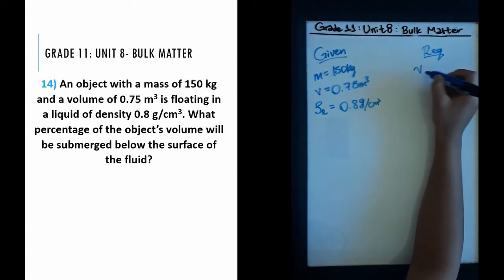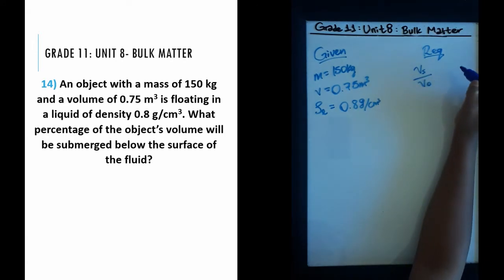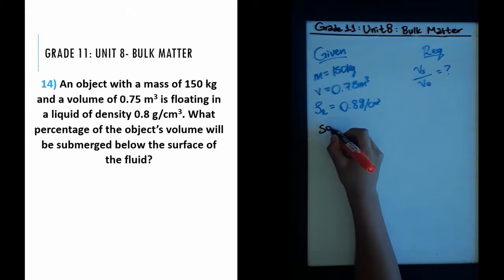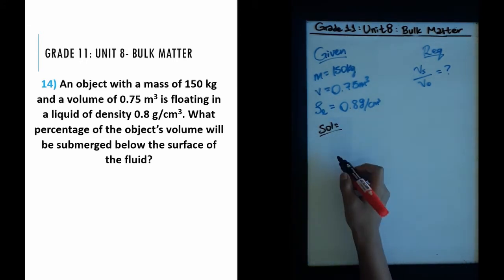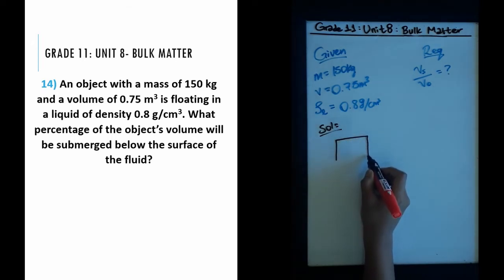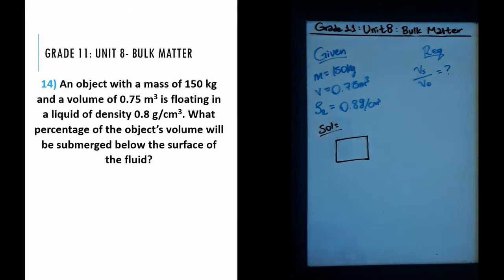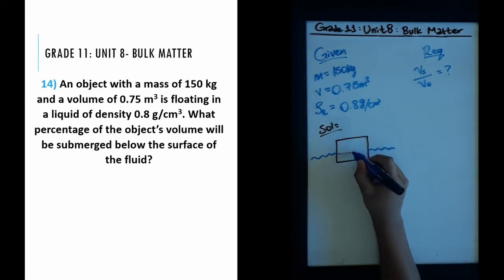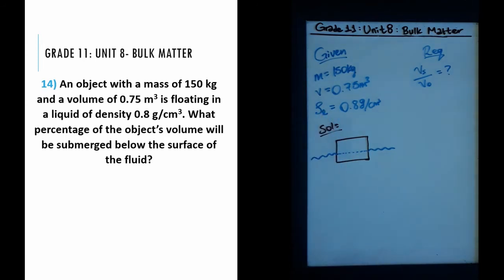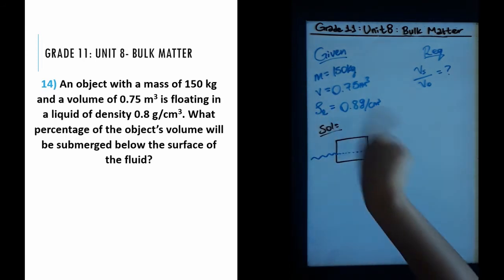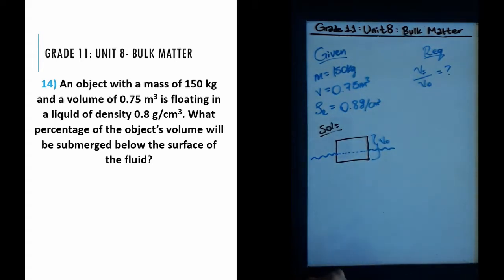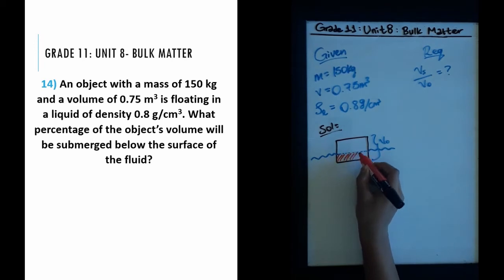We are required to find the percentage of the volume submerged. Let me draw out what is actually happening. We have a block of mass 150 kg floating in a liquid — it's not completely submerged. Some of it is above the surface and some is below. The question asks: from the total volume of the object (V_o), what percent is submerged?